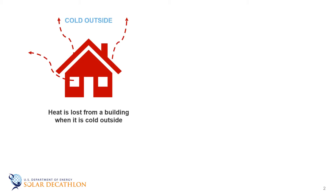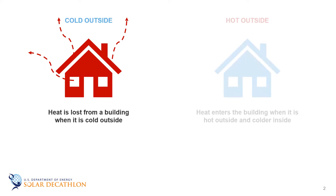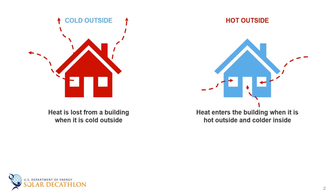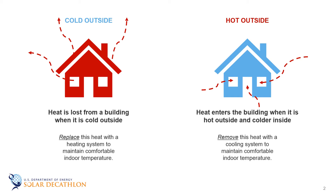In our building envelope module, we talked a lot about how heat is lost from a building when it is cold outside. The reverse is also true — when it is hot outside and cooler inside, heat enters the building. To maintain a constant indoor temperature, we need to add heat in the winter to replace the heat that is lost. In the summer, we need to cool the building, which is really the process of removing heat from inside. Typically, we accomplish this with heating and cooling systems.